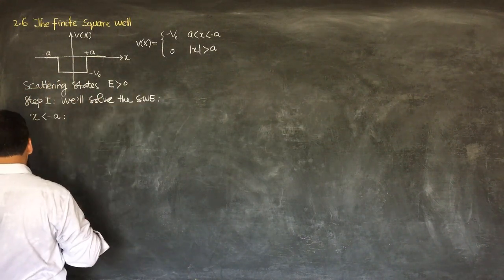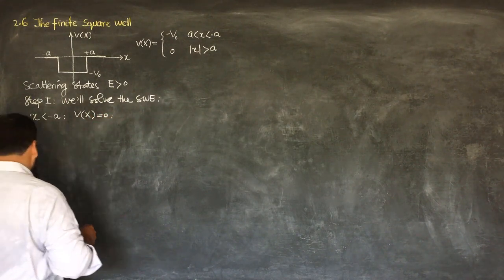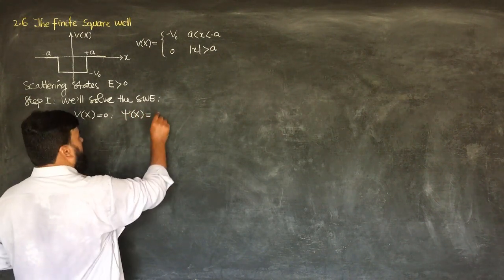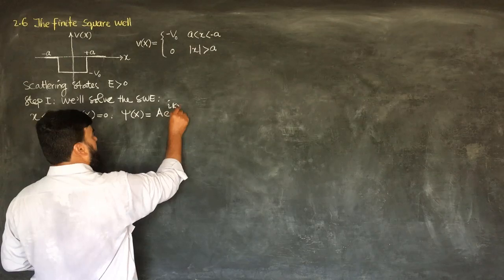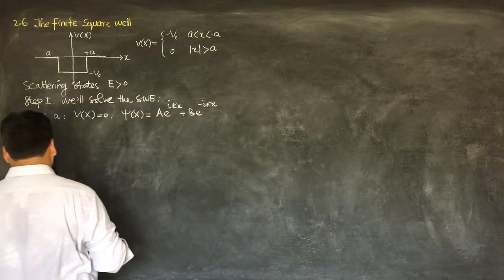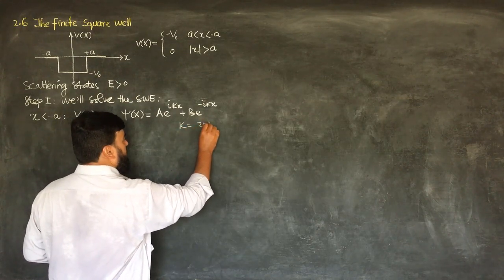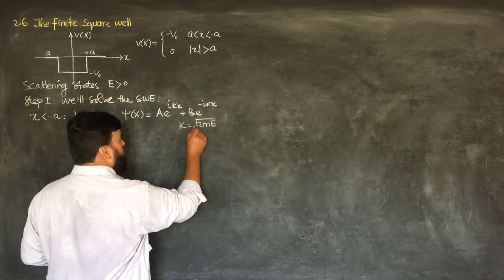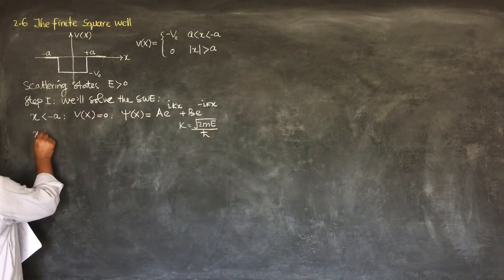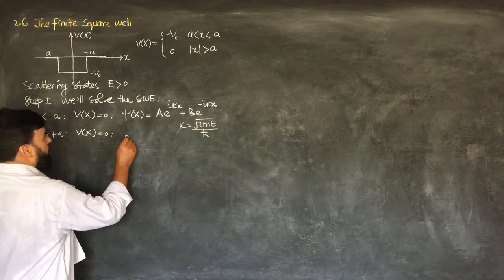V(x) will be equal to 0, and we will have the solution in the form of exponentials: ψ(x) = Ae^(ikx) + Be^(-ikx), where k = √(2mE) / ℏ. Similarly, when x is greater than plus a, we again have V(x) = 0.